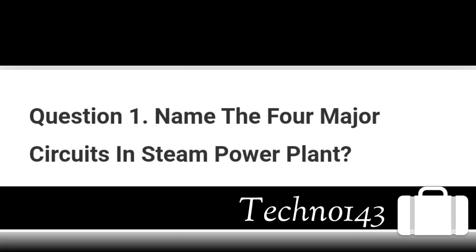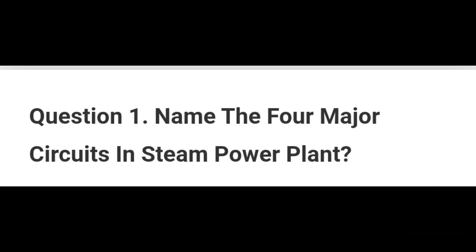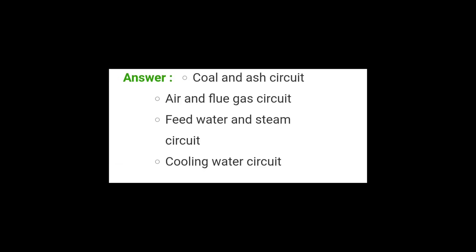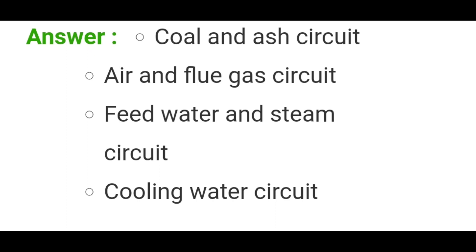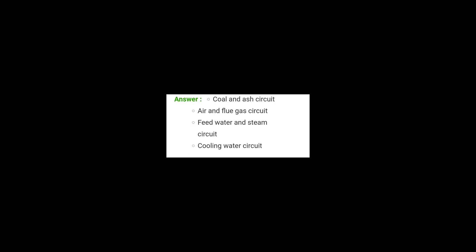Question number 1. Name the 4 major circuits in a steam power plant. Answer: Coal and ash circuit, air and flue gas circuit, feed water and steam circuit, cooling water circuit.